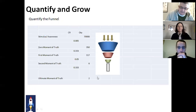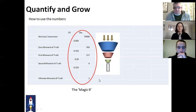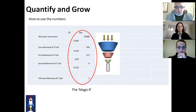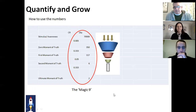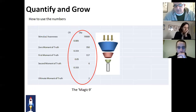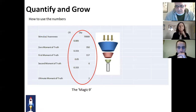What we are producing here is what I refer to as the magic nine numbers. We have five quantities — one, two, three, four, five — and four conversion rates — one, two, three, four. Those are the magic nine in any funnel or combination of funnels that you put together, and you'll use them further down the line for building your KPIs, or key performance indicators.